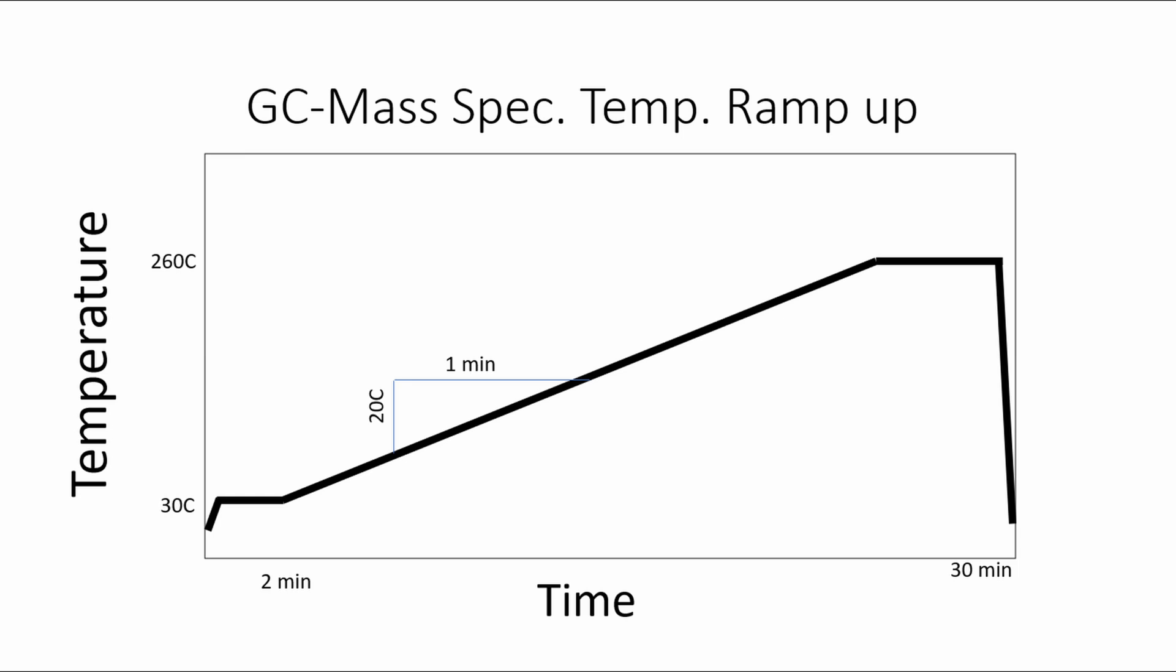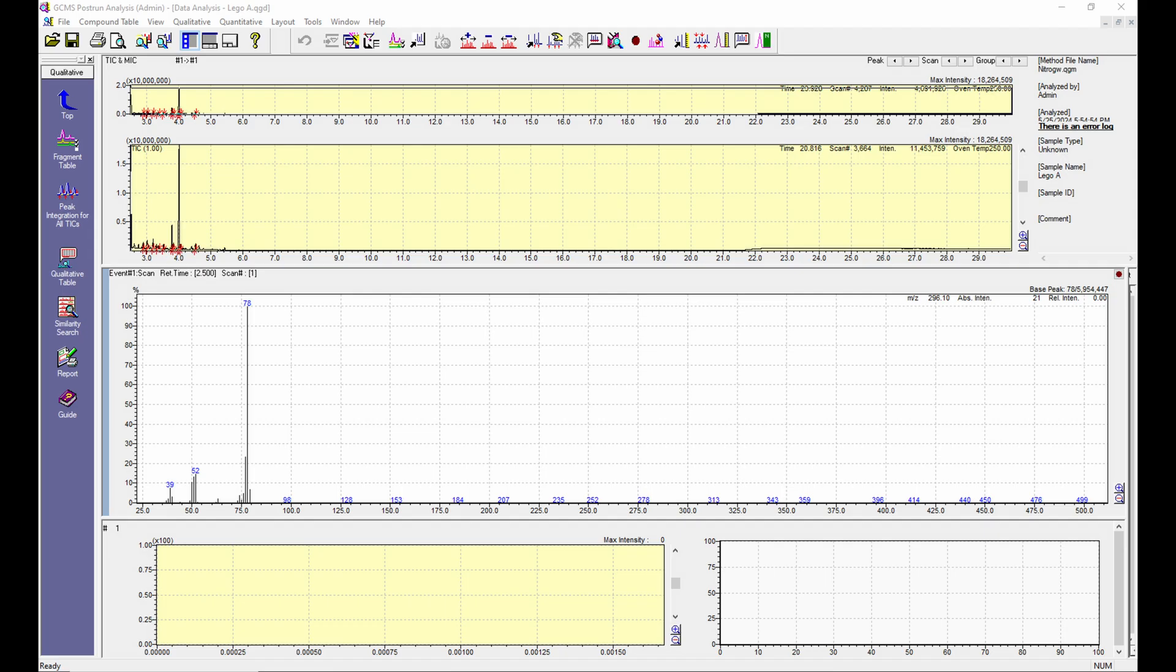So after 2 hours, we had complete the analysis for all 4 samples. The GC mass spec outputs data as both a retention time chart and a mass spectra from fragments.